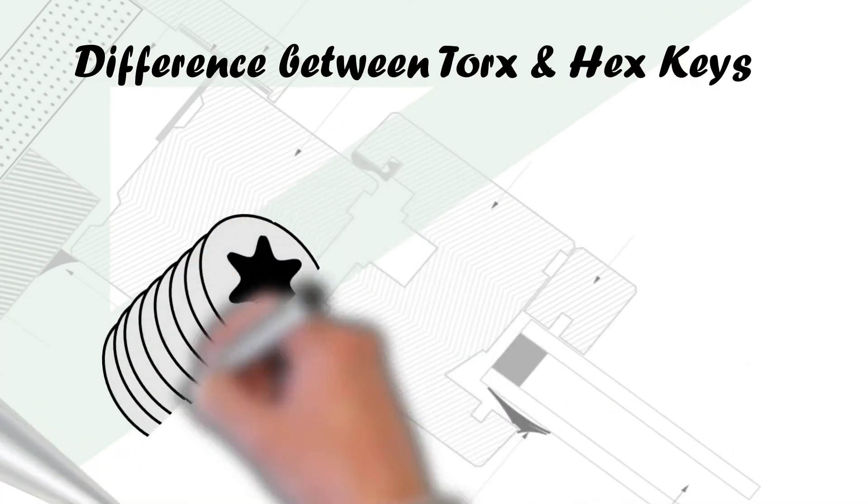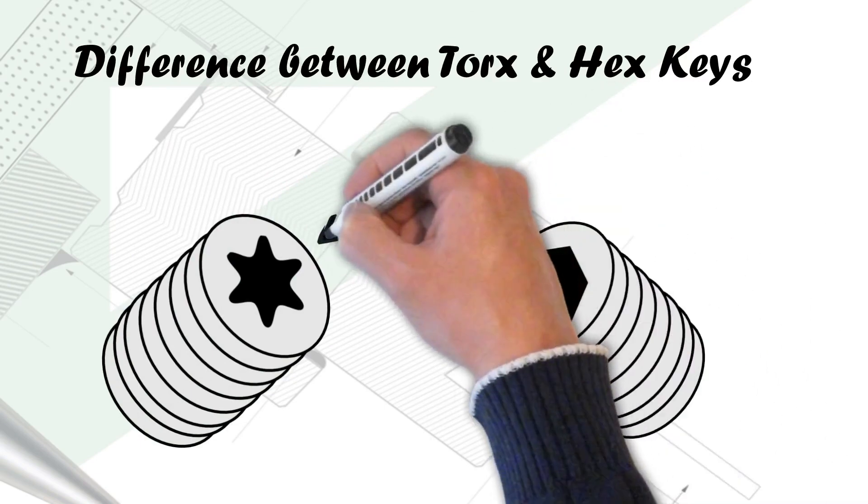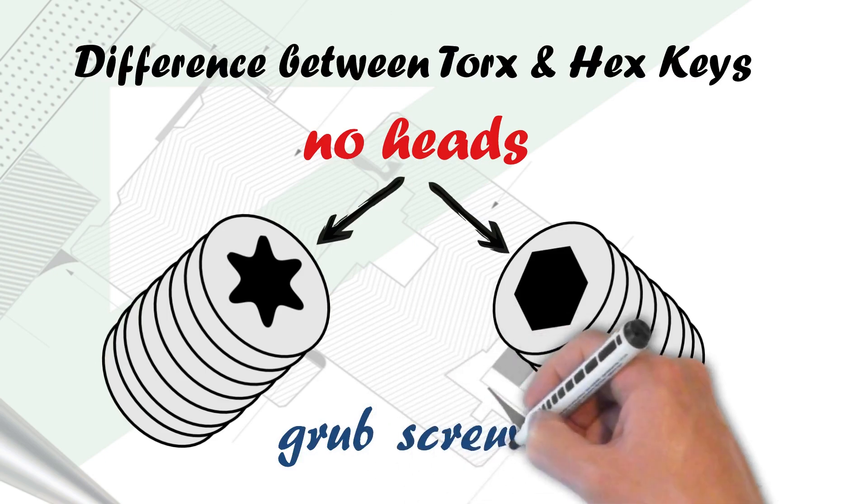It is also possible to have a screw or a bolt that has no head when using a Hex key or Torx key. These are known as grub screws.